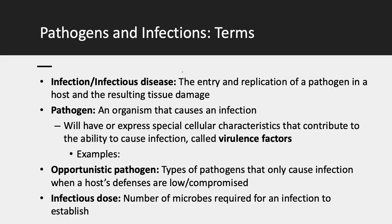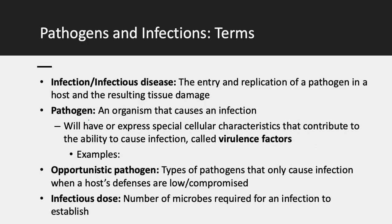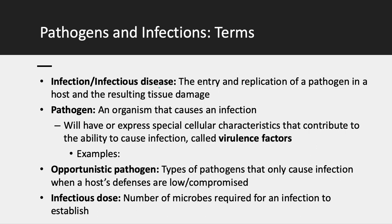Now we transition to microbes that cause disease. An infection or infectious disease is when a pathogen enters and replicates inside a host, resulting in damage like a sore throat or diarrhea. A pathogen is the microorganism that causes the infection; the infectious disease is what happens because of the pathogen. For example, C. diff — Clostridium difficile — would be the pathogen, and the disease would be antibiotic-associated diarrhea.